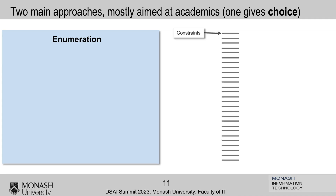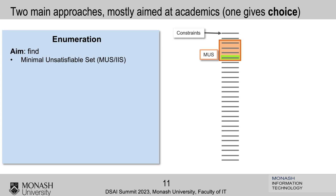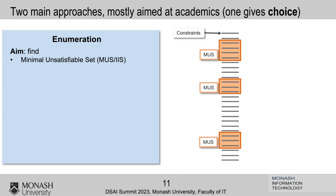The idea: if I have a set of constraints, I want to find a Minimal Unsatisfiable Subset — a MUS. What does that mean? I want to find, say, four constraints such that if I choose any one of them and take it off, those four constraints — which were unsatisfiable by themselves — suddenly become satisfiable. The three remaining become satisfiable, no matter which one I choose. It's like finding the smallest part of a bag where the bag breaks.